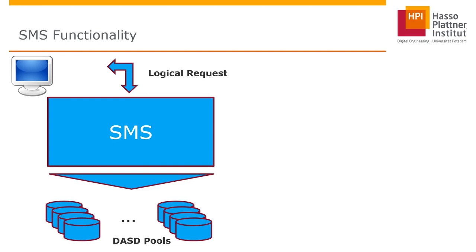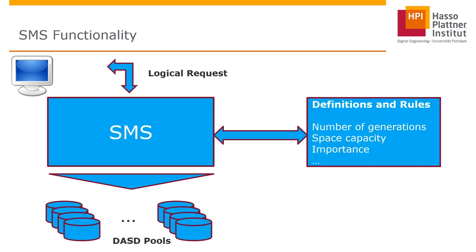For example, if you allocate a dataset with the last level qualifier of COBOL, SMS automatically knows that you want a logical record length of 80, because COBOL source code is still managed with a logical record length of 80. Some other assumptions are also made, so you just provide your logical information and SMS does the physical placement of the data depending on your logical request. There are definitions and rules given into such an environment.